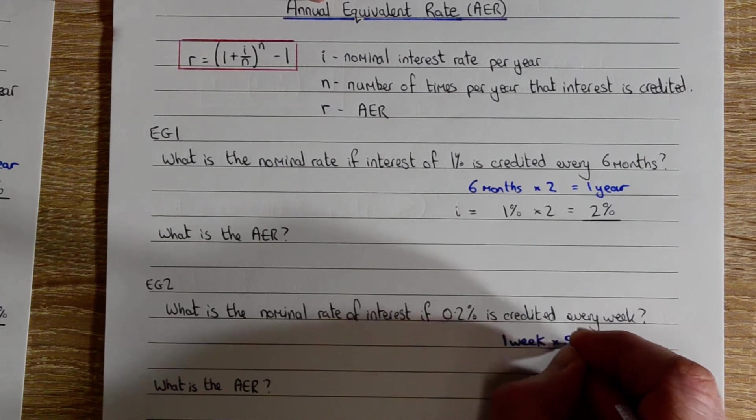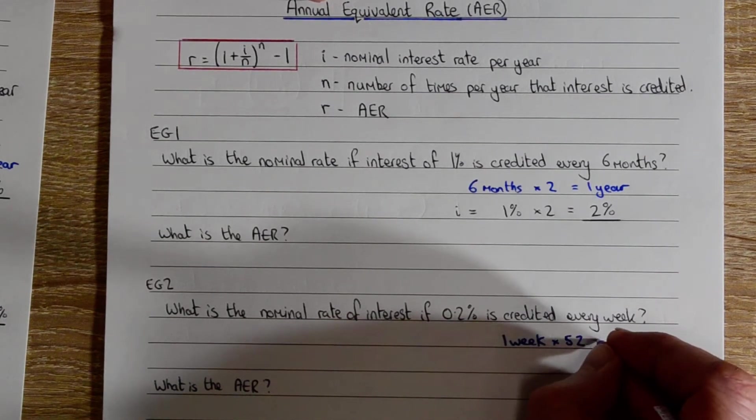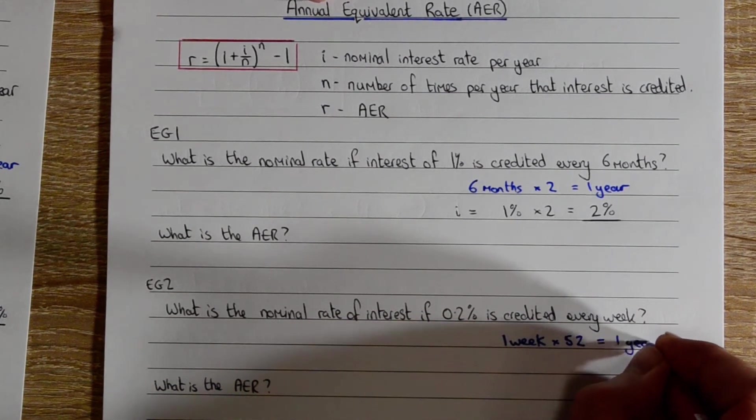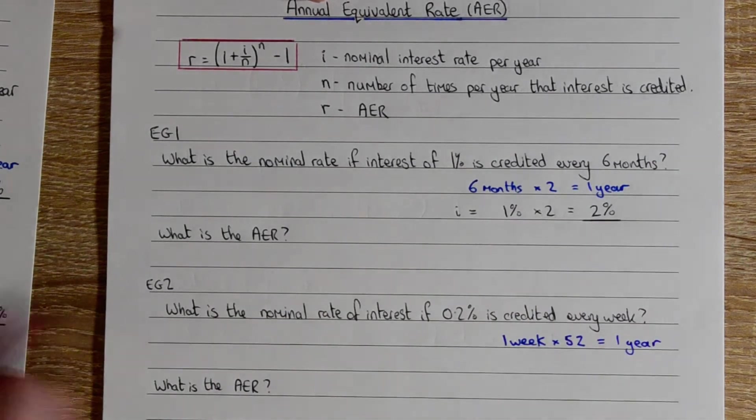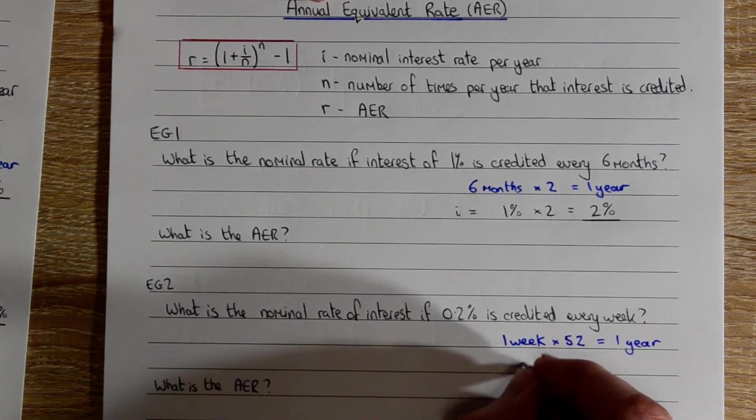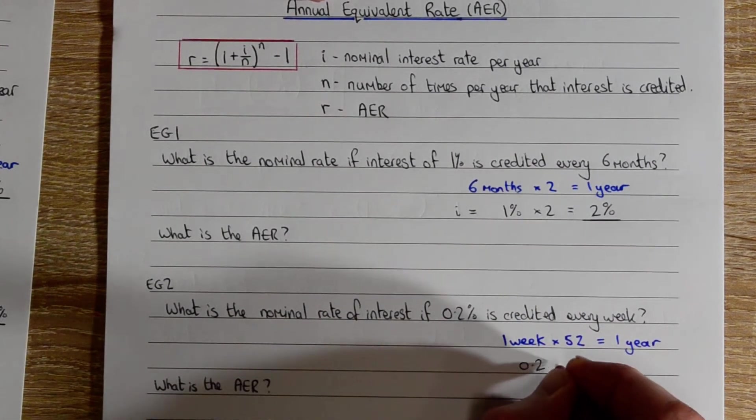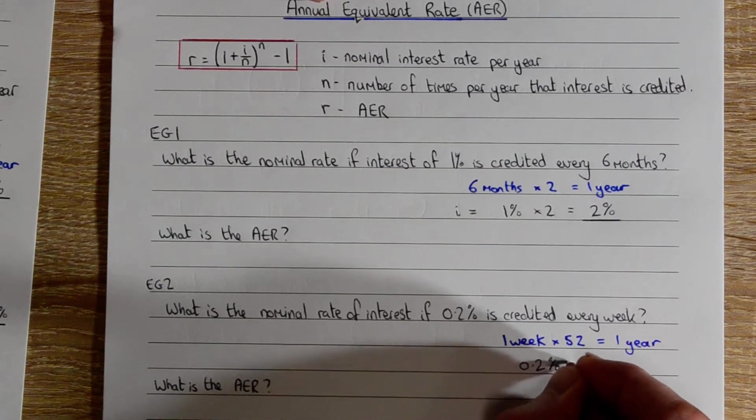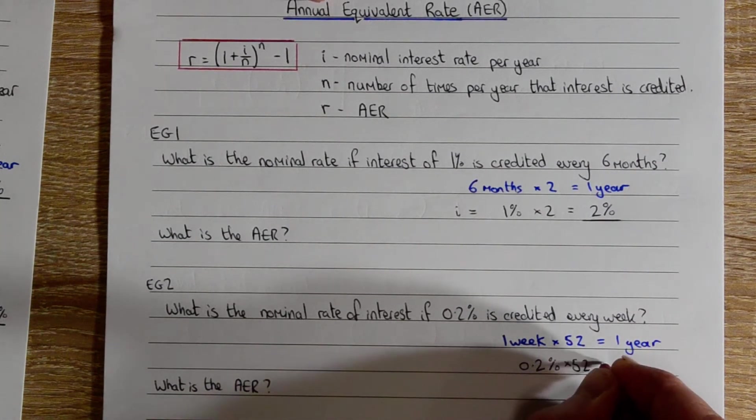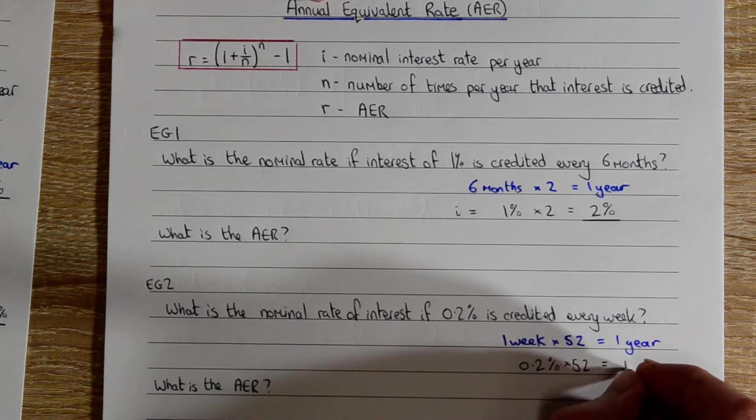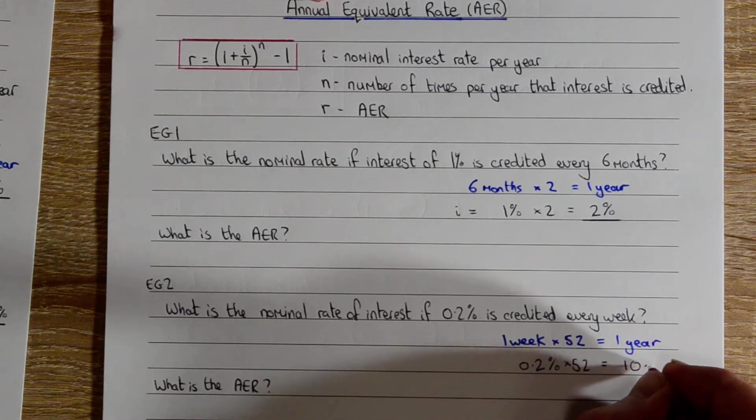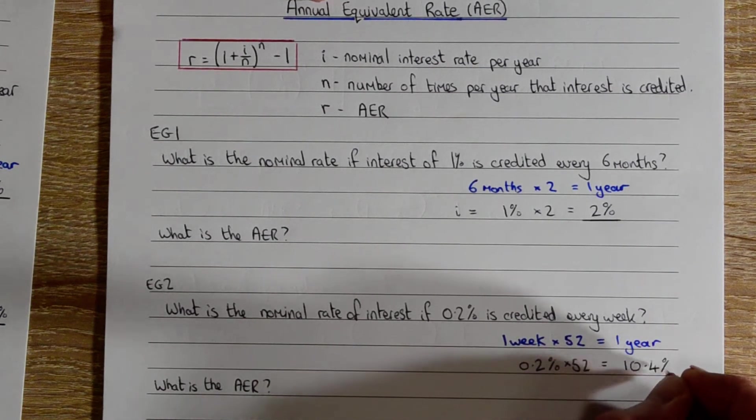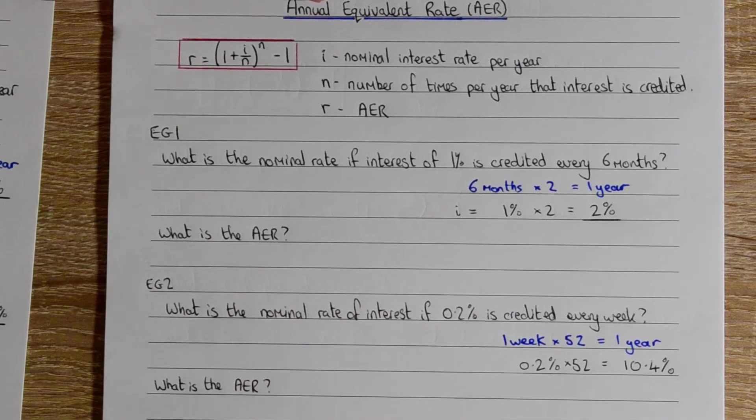To turn it into a year, we need to multiply by 52. Exactly the same thing to the interest to find the nominal rate, and there we have our nominal rate.